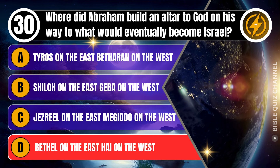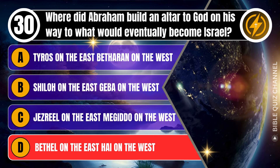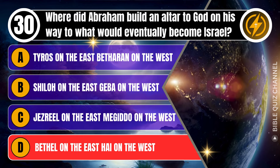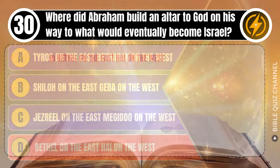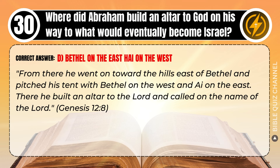Correct answer: D. Bethel on the east, Hai on the west. Explaining the Bible — From there he went on toward the hills east of Bethel and pitched his tent, with Bethel on the west and Hai on the east. There he built an altar to the Lord and called on the name of the Lord. Genesis, chapter 12, verse 8.